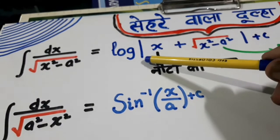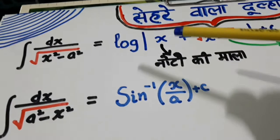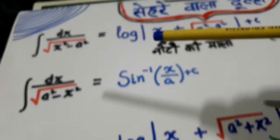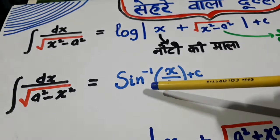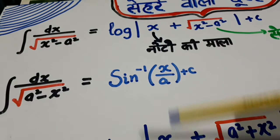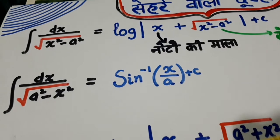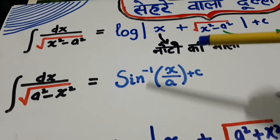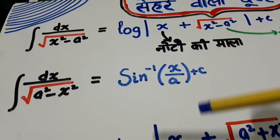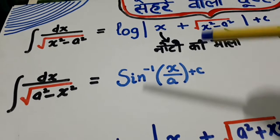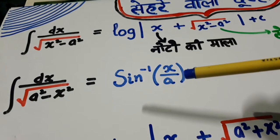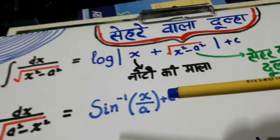The first one's answer is in log, the second is also in log, and the third one is in terms of inverse. Out of the three, two are always in terms of log, whereas the third is in terms of inverse trigonometrical function.